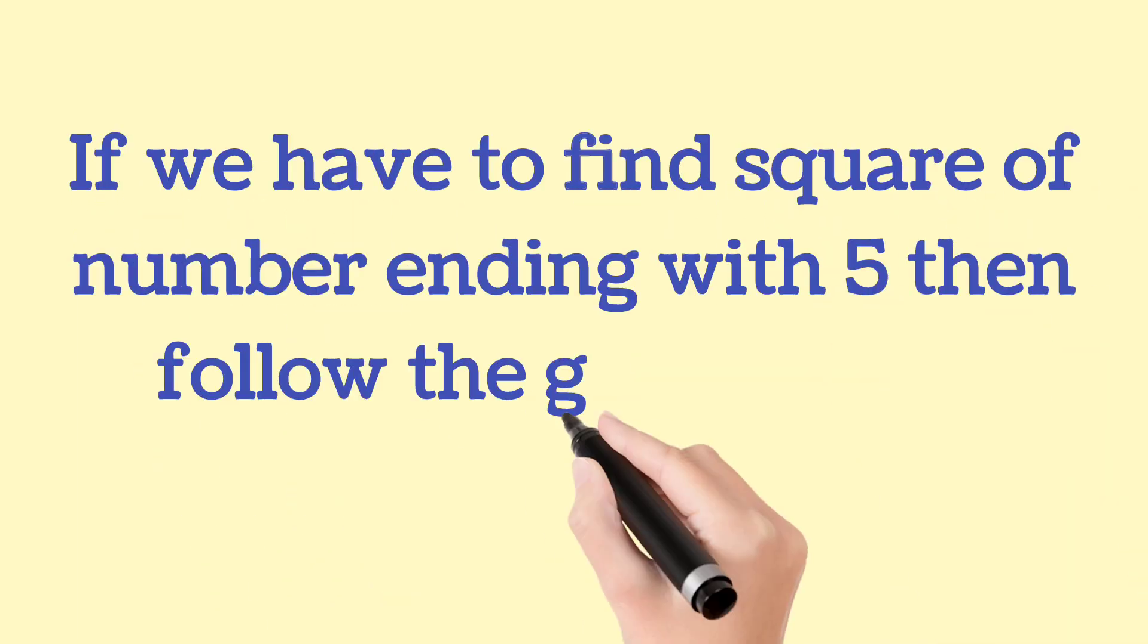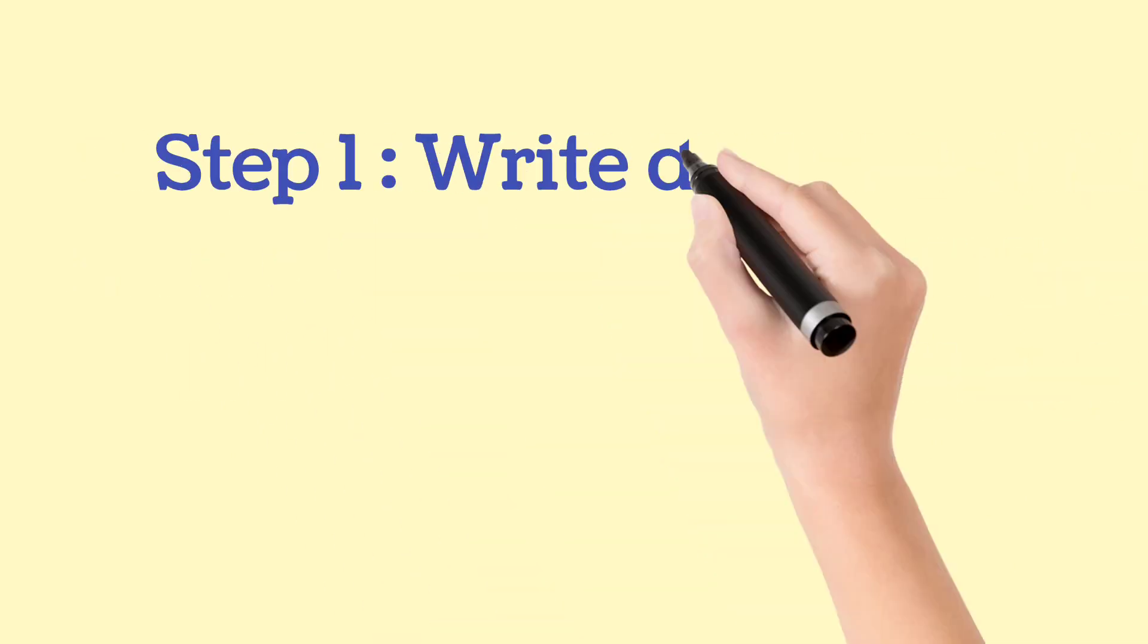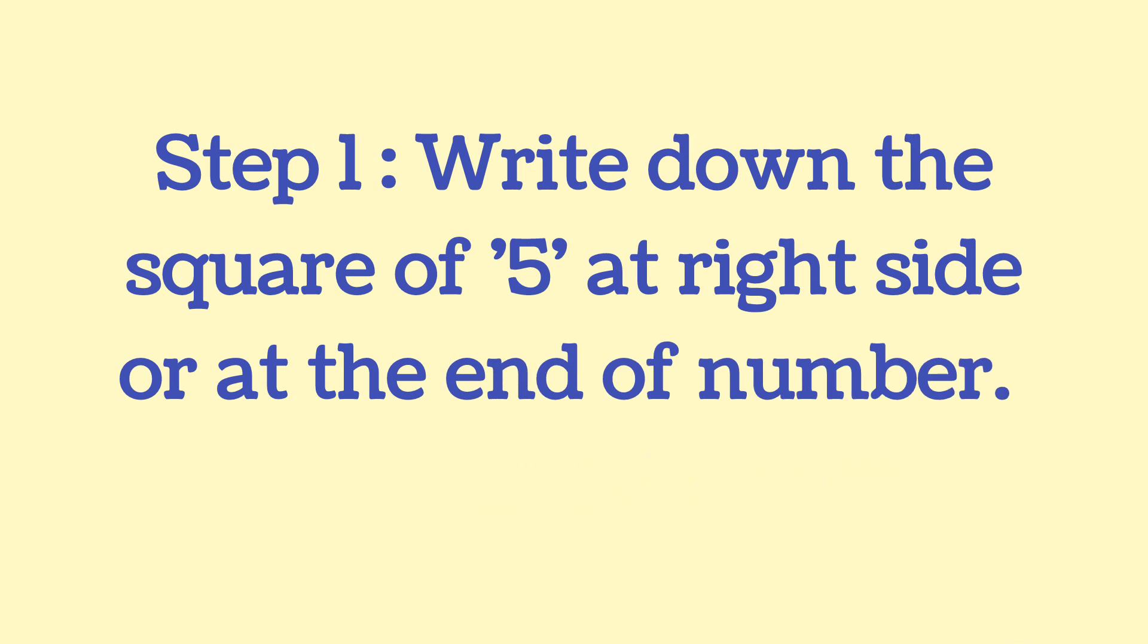If we have to find square of number ending with 5, then follow the given steps. Step number 1: Write down the square of 5 at right side or at the end of number, that is 25.